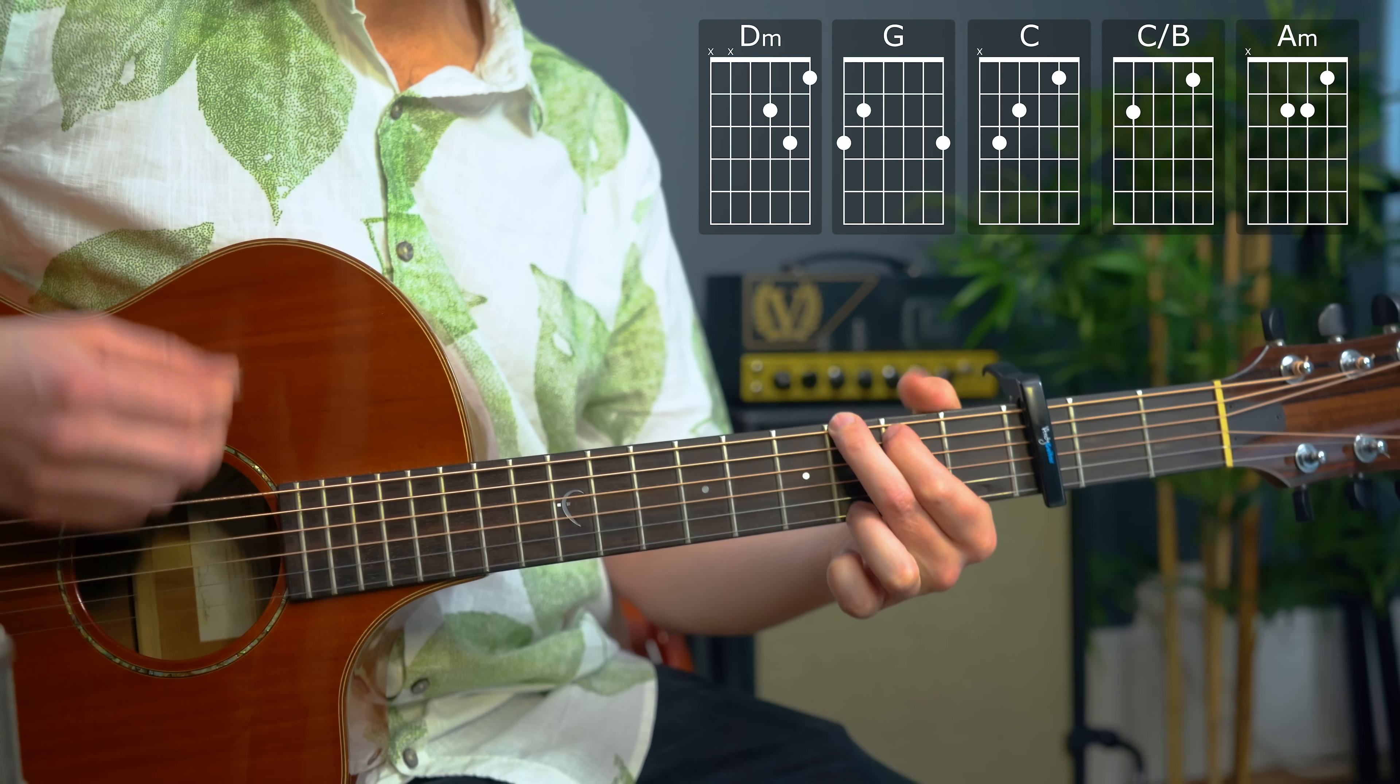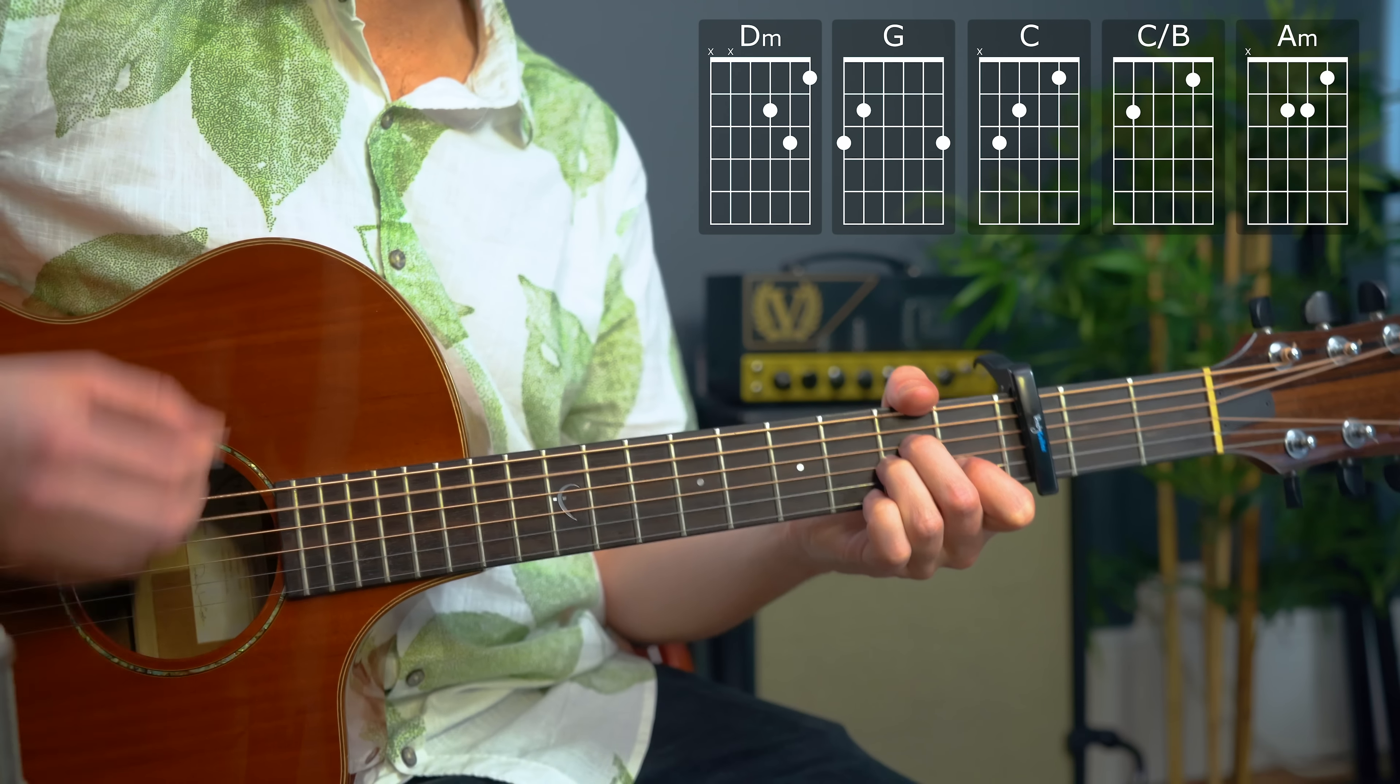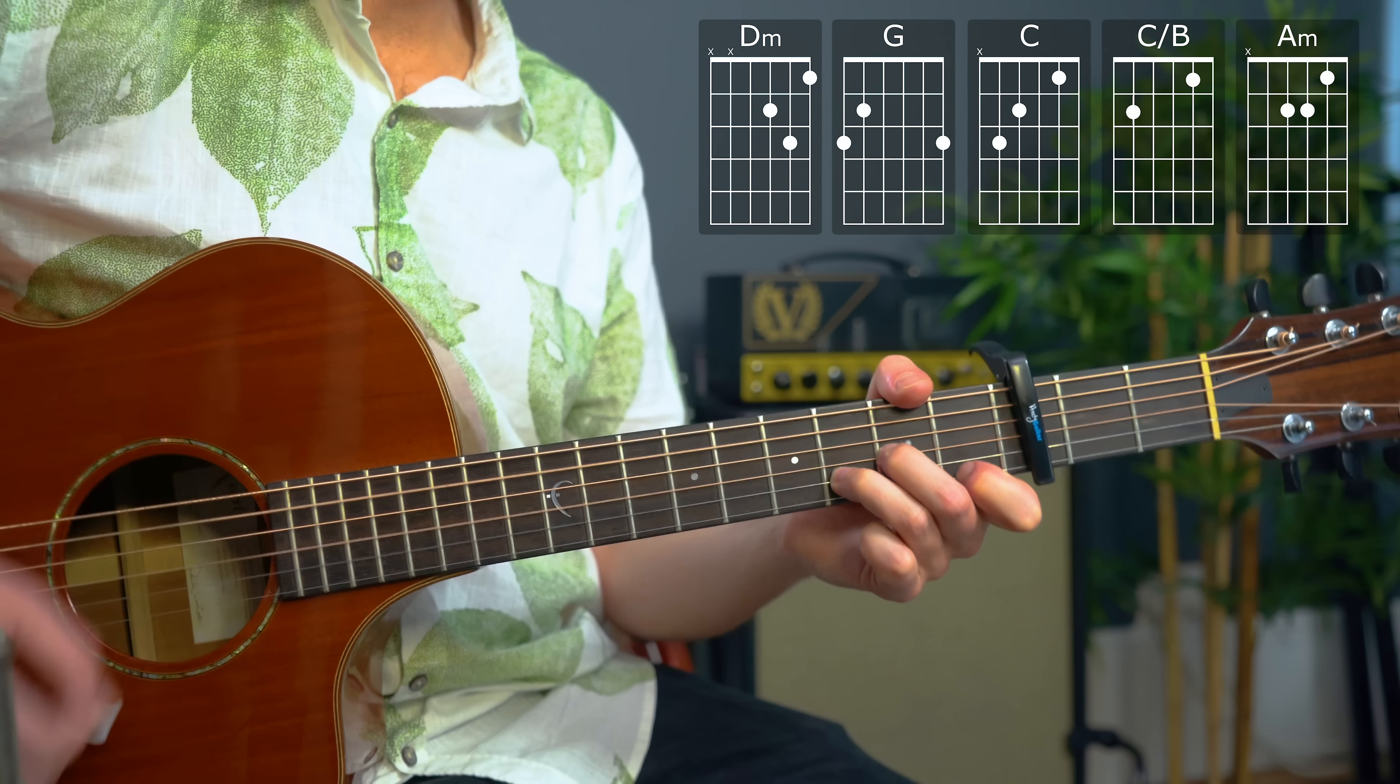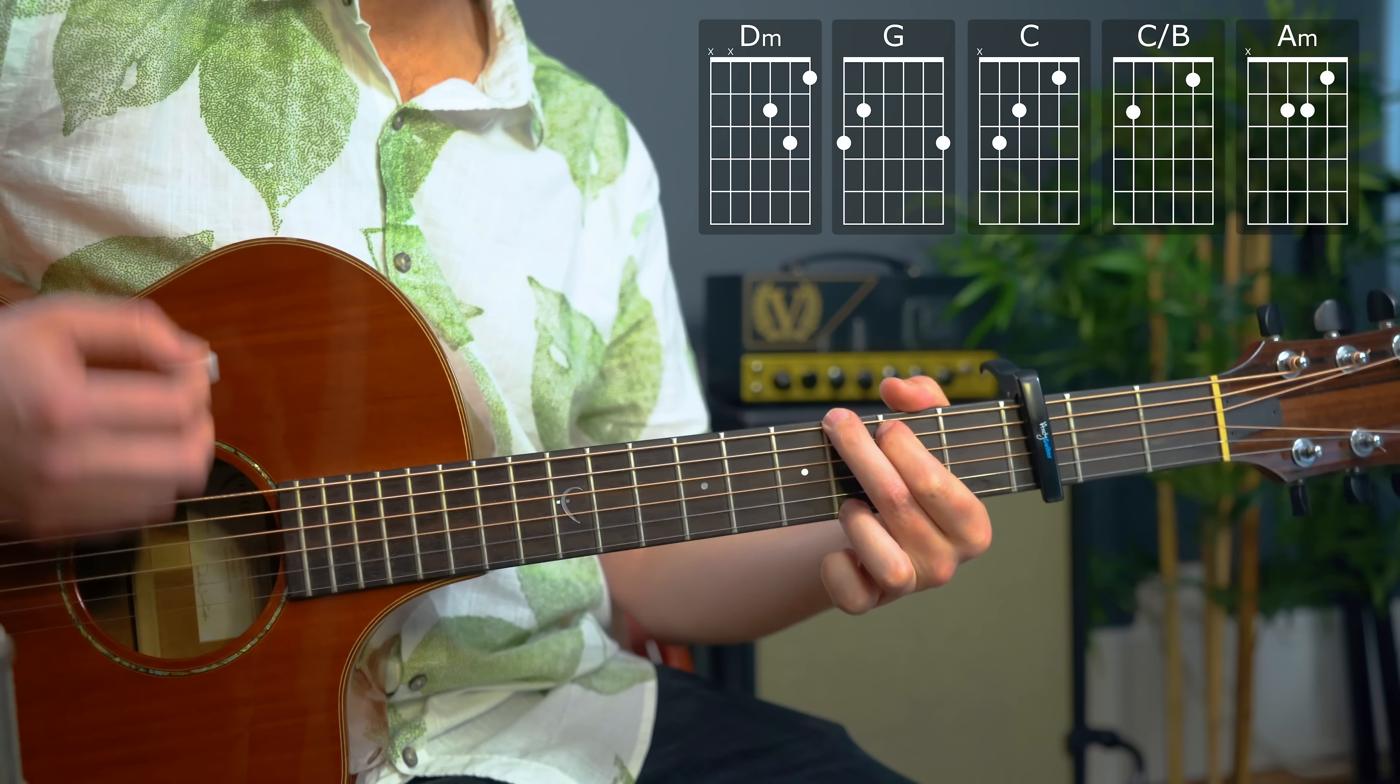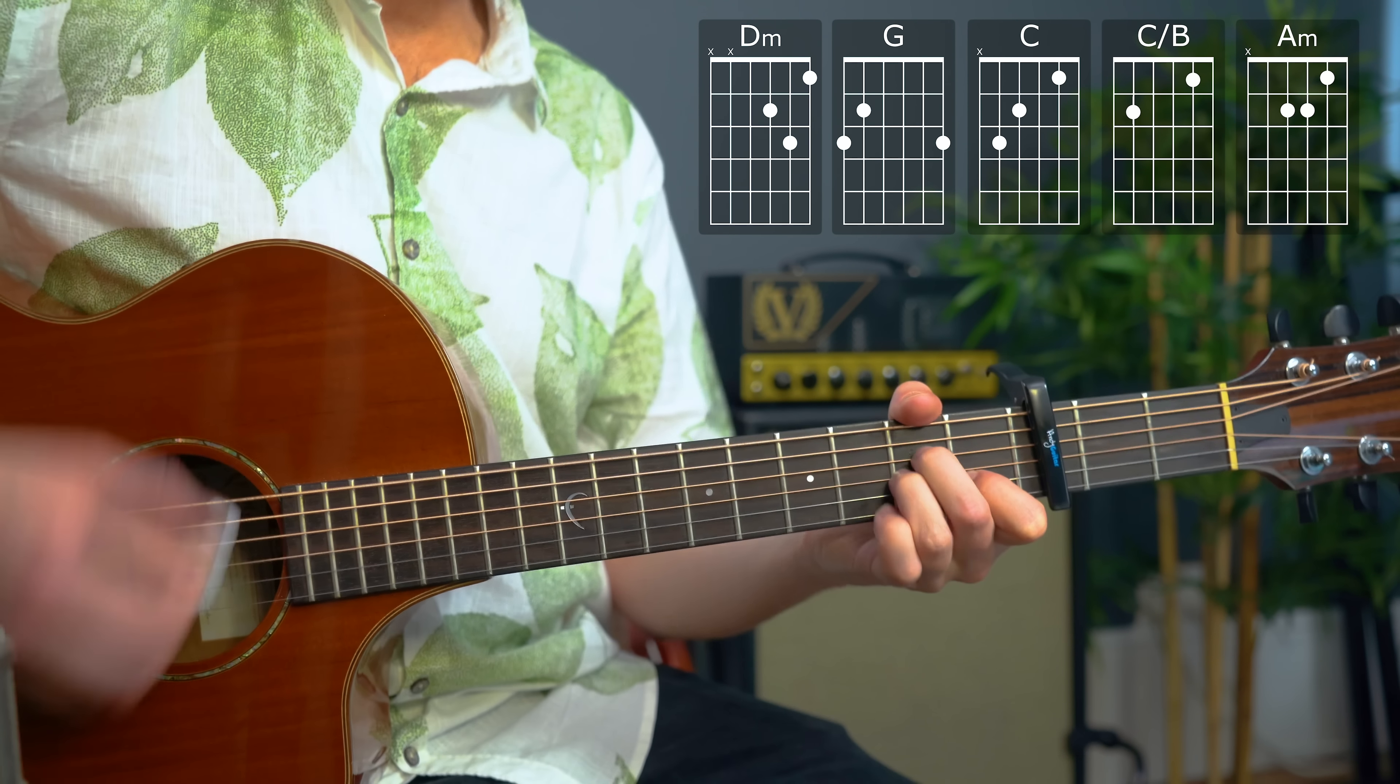If you want to do anything cooler with the strumming, you might want to just go for a full bar of C. [demonstrates] That would also work if you're doing a bit more muting, it would make it a lot easier.